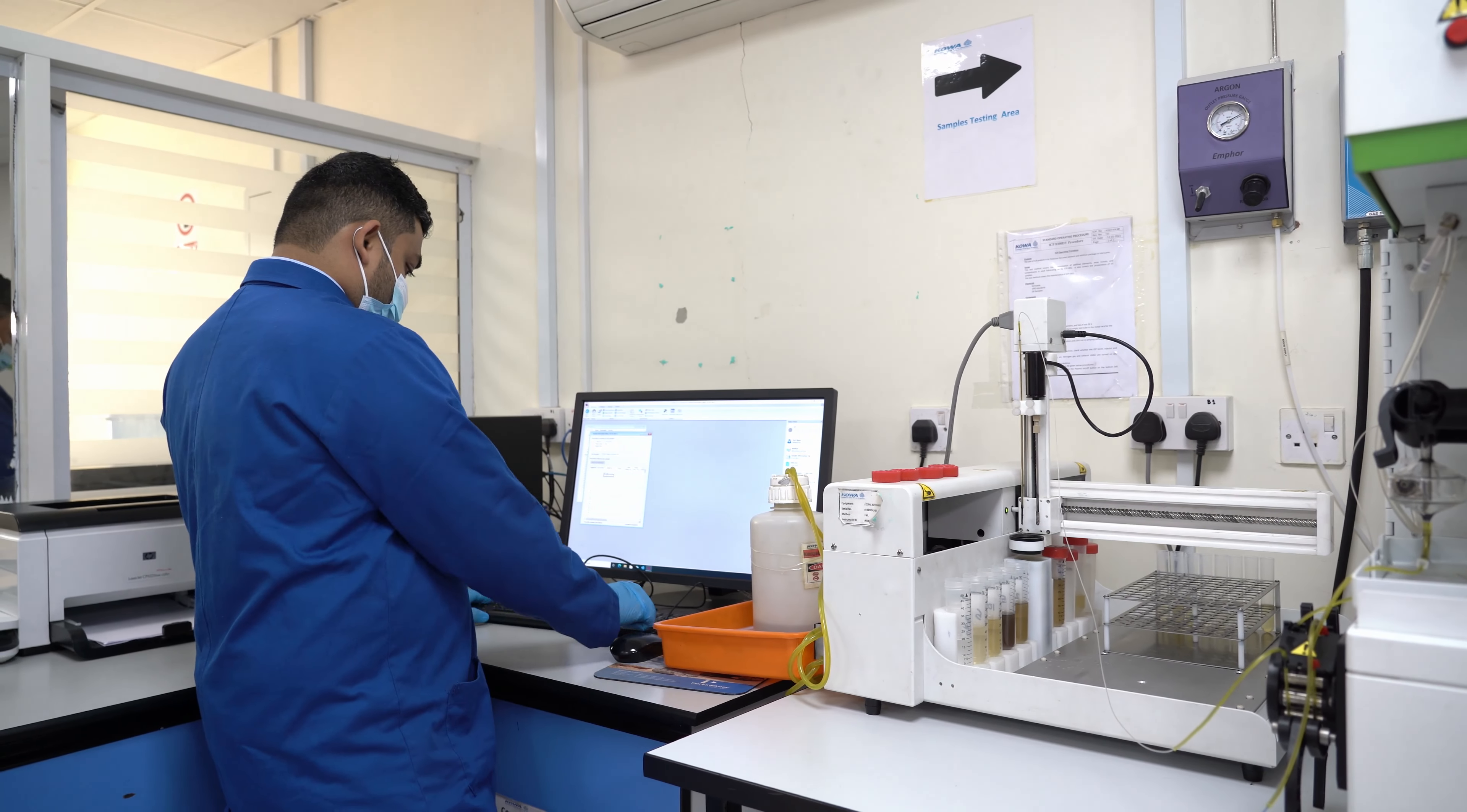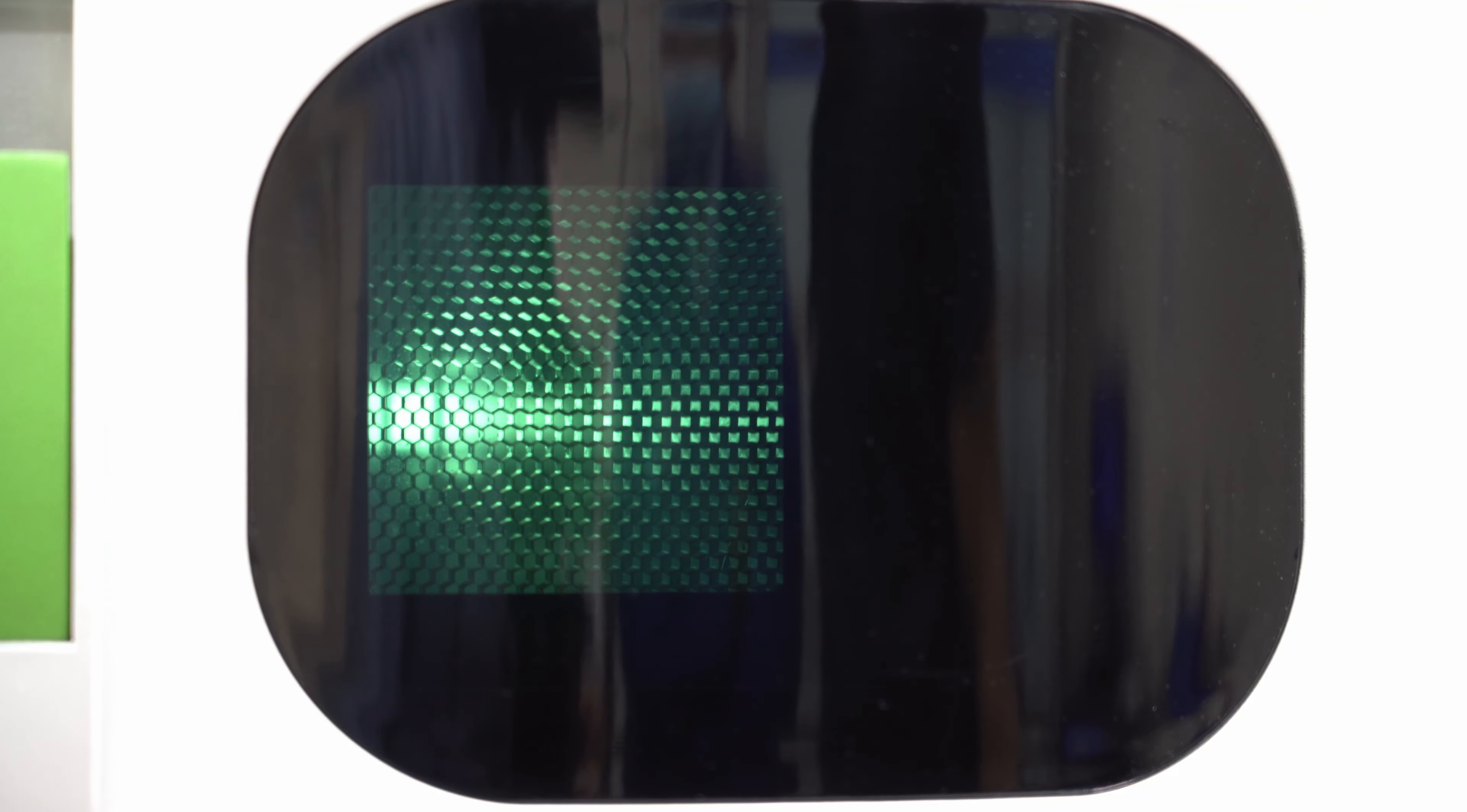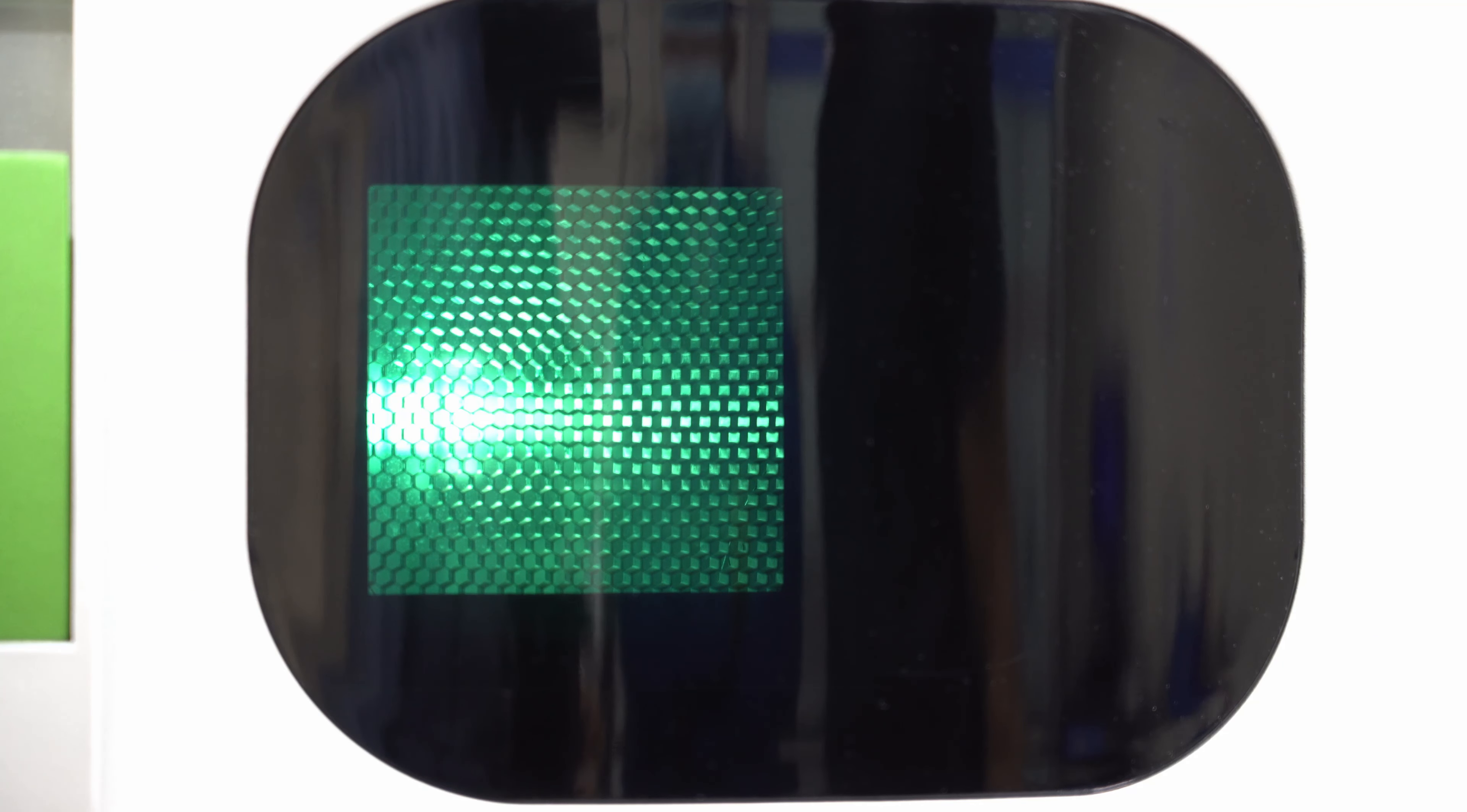The solvent diluted oil sample is introduced to the plasma torch in the form of aerosol with plasma temperature in the range of 6,000 to 10,000 degrees Celsius.